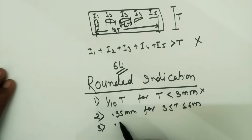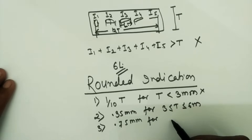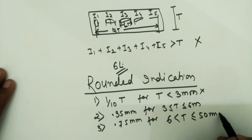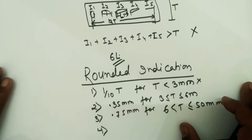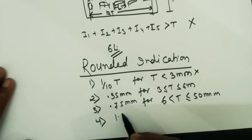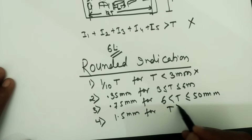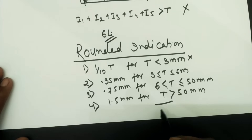For deposited weld metal thickness more than 6 mm and less than or equal to 50 mm, any rounded indication with dimension more than 0.75 mm shall be rejected. For deposited weld metal thickness more than 50 mm, any rounded indication with dimension more than 1.5 mm shall be rejected. This covers all the acceptance criteria for rounded indications per Mandatory Appendix 4.